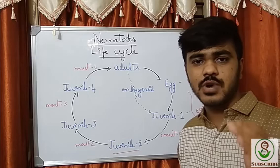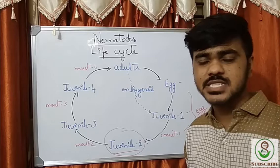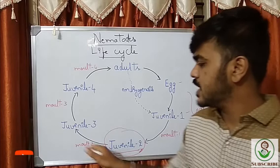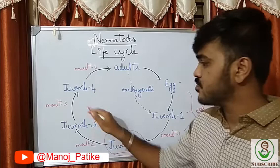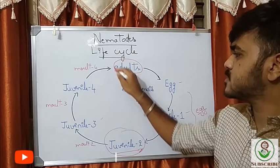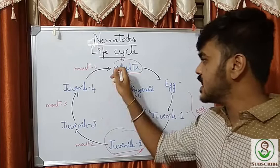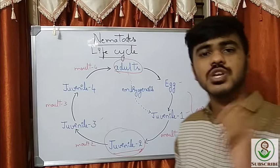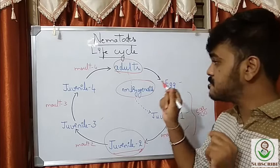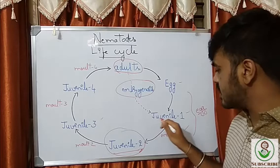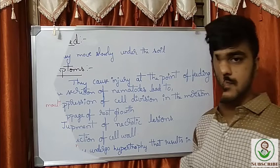Juvenile 2 is very important from an agricultural point of view because this is the stage that is very harmful for many plants — it possesses the parasitic character. Then it undergoes the second molt and develops into juvenile 3, then the third molt to juvenile 4, and the fourth molt into an adult, where it can be differentiated into male and female. There also exists a special character: embryogenesis has been observed in nematodes, so from adults they can directly develop into a juvenile 1 stage.